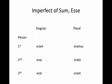So let's start with the imperfect of sum, esse. Below are the forms of it. We have eram in the first person singular, eras in the second person singular, erat in the third person singular, eramus in the first person plural, eratis in the second person plural, and erant in the third person plural.